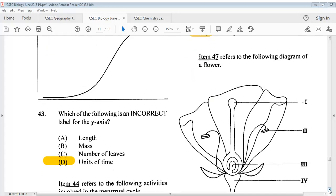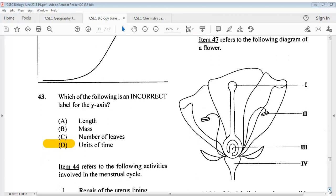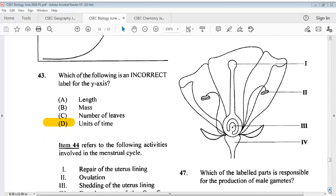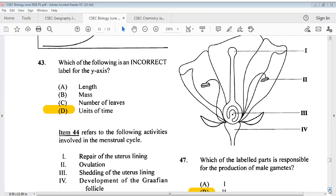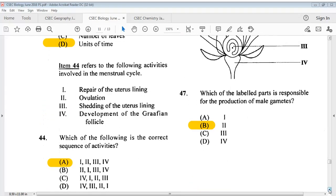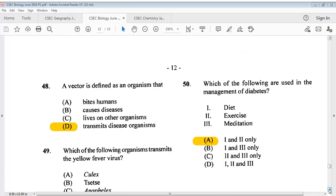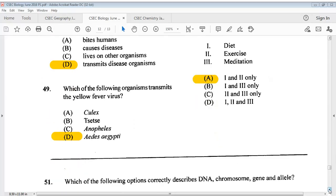Question 47, item 47 refers to the following diagram of a flower. There we have five parts. The answer for 47 is B. For question 48, a vector is defined as an organism that, the answer is D, transmits disease organisms. The answer for 49 is D.